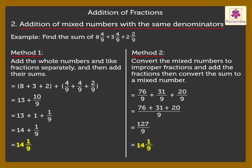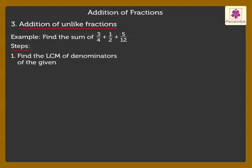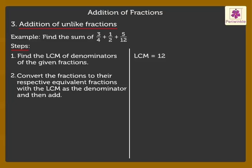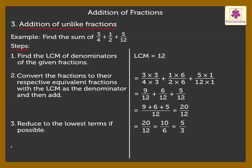Now, let us learn to add unlike fractions. Look at the given unlike fractions. Step 1: Find the LCM of the denominators of the given fractions. Here, the LCM of 4, 2, and 12 is 12. Step 2: Convert the fractions to their respective equivalent fractions with the LCM as the denominator and then add. Step 3: Reduce to the lowest terms if possible.